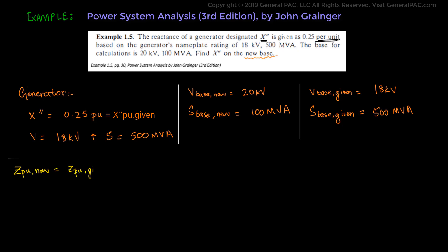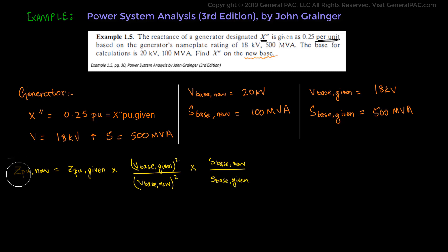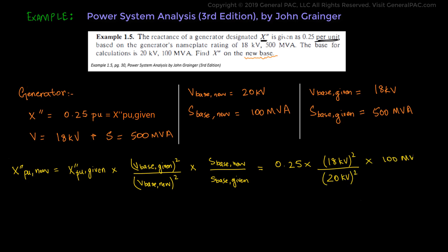The formula is: Z per unit new equals Z per unit given times V base given squared divided by V base new squared, times S base new over S base given. Equivalently, X double prime per unit new equals X double prime per unit given times V base given squared over V base new squared, times S base new over S base given. Entering the values: X double prime per unit new equals 0.25 times (18 kV)² over (20 kV)² times 100 MVA over 500 MVA, which equals 0.25 times 0.81 times 0.2, giving 0.0405 per unit.